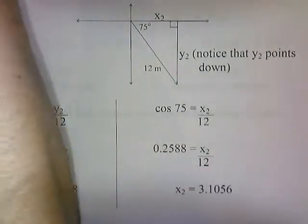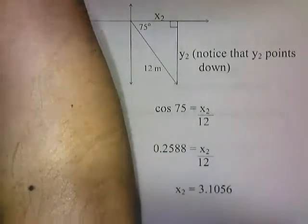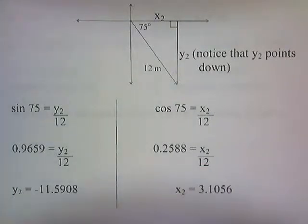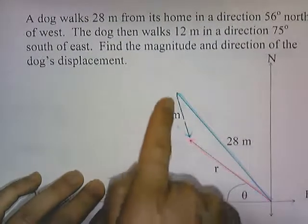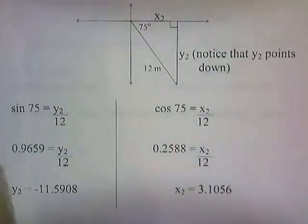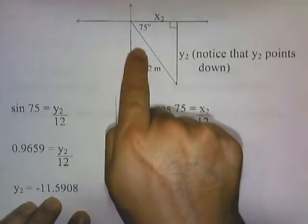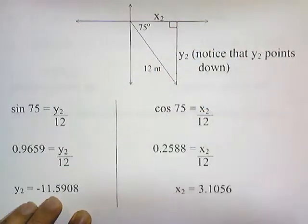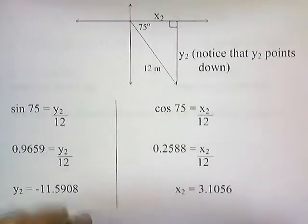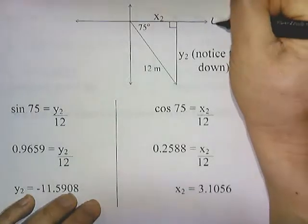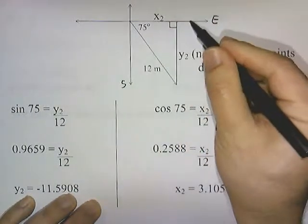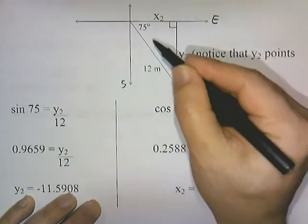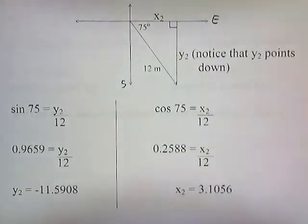The next vector is 12 meters in a direction 75 degrees south of east. This vector is 75 degrees below the east axis, and it's 12 meters long. That's the direction and path the dog takes on the second part of its journey. We're going to solve for the x and y components of this second vector.